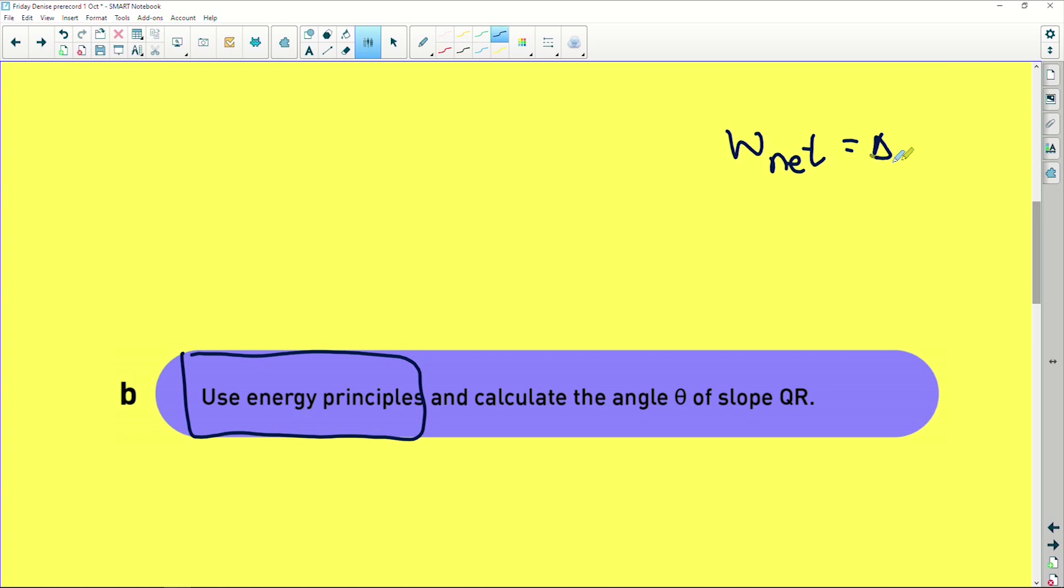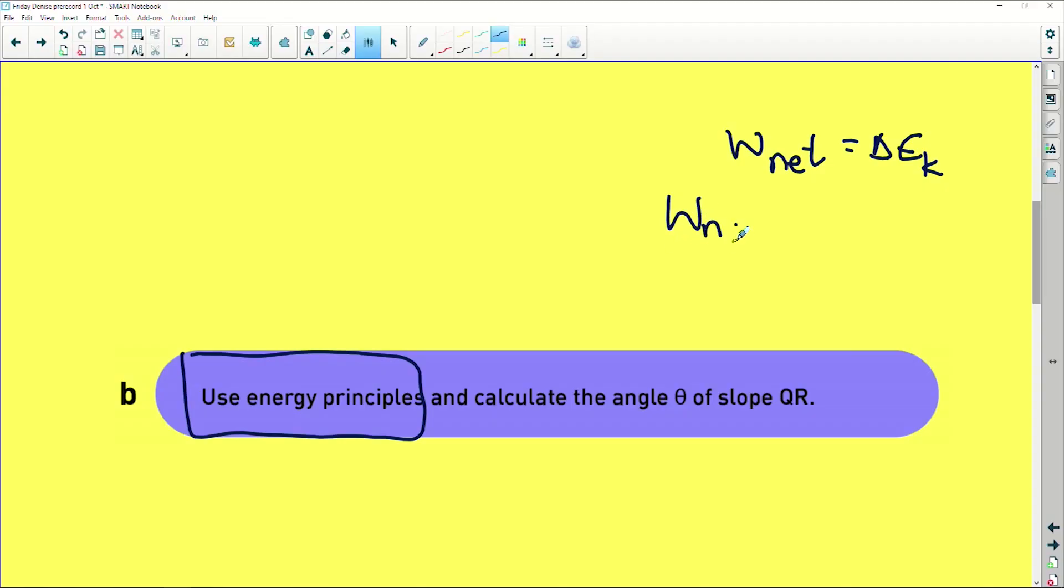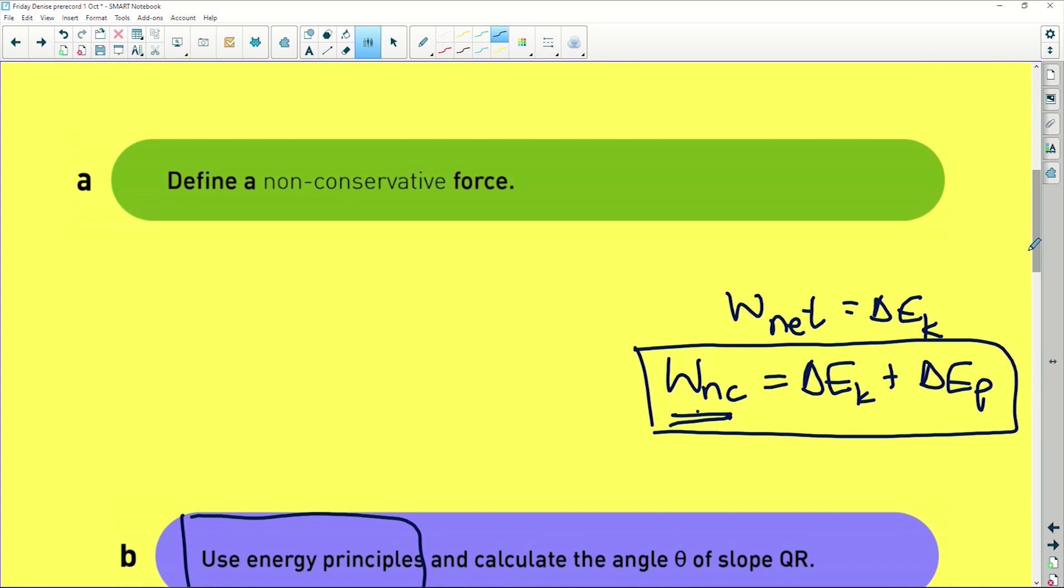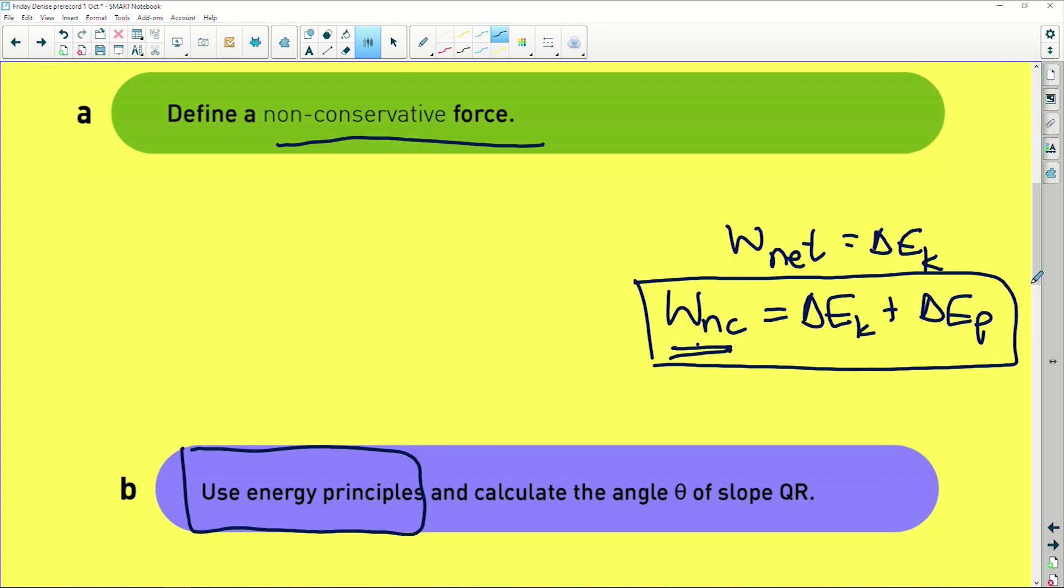Now it says use energy principles and calculate the angle theta of slope QR. If you get a question like this when they say using energy principles and they haven't specified, you can either use W_net equals delta E_K. That would be one way of doing it, and that is known as the work energy theorem. So you could use that, that's energy principles. And the one that I would like you to use is W_NC. So on our information sheet, we are looking at this equation and that is also an energy principle. This says the work done by the non-conserved force, and guess what, they led you into this because they're asking you for the definition of a non-conserved force.